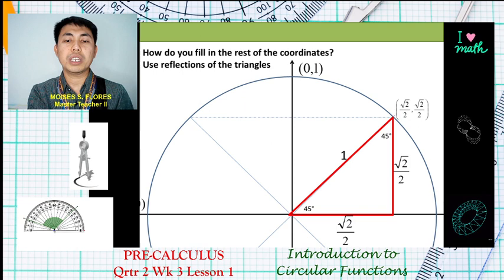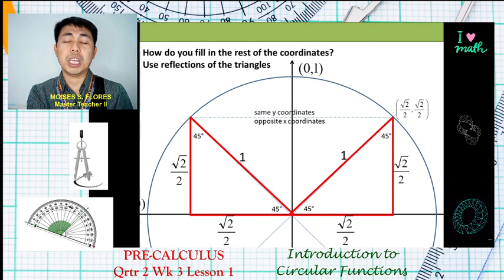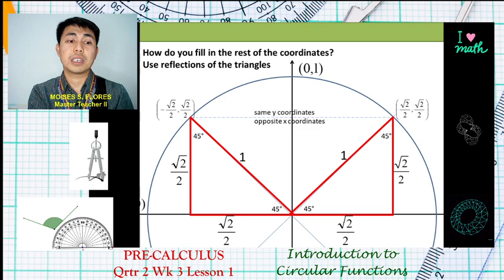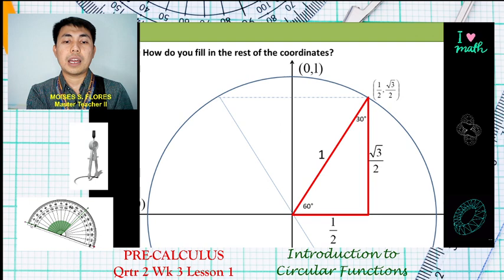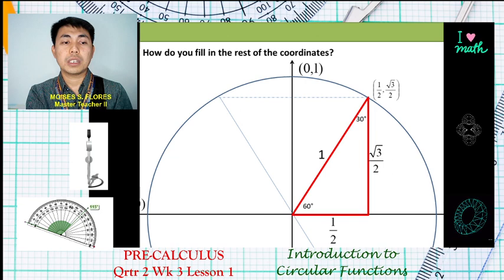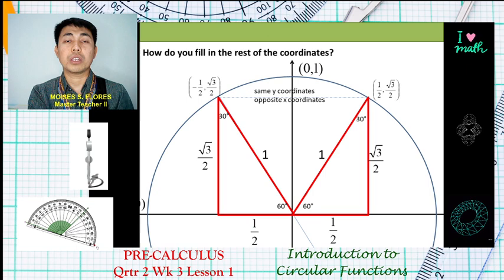For the 45-90 triangle in quadrant 2, the coordinates (√2/2, √2/2) reflect to (-√2/2, √2/2) — same y-coordinates but opposite sign for x. Similarly, for the 30-60-90 triangle reflected to quadrant 2, we get (-1/2, √3/2).